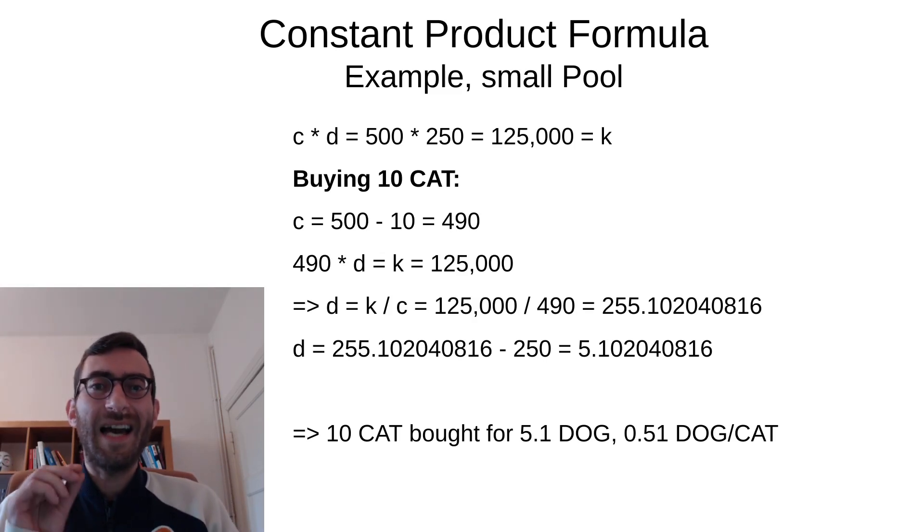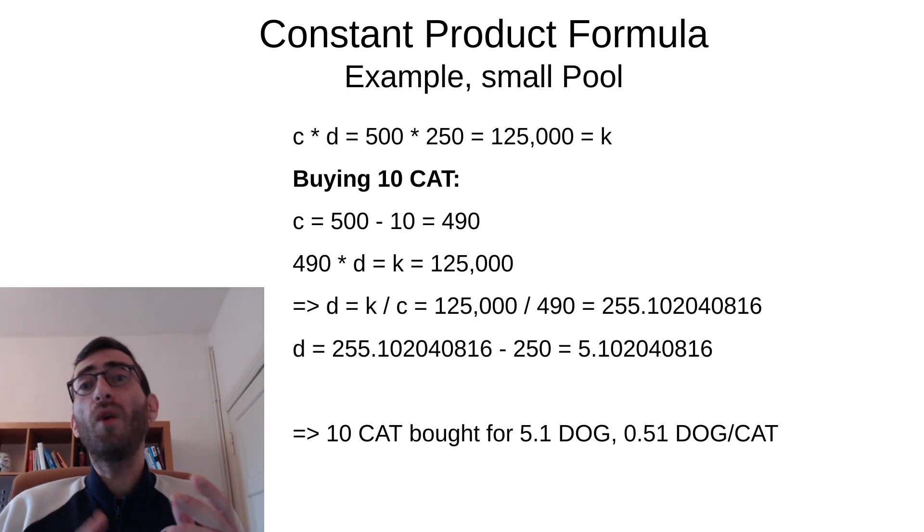So this is a tiny bit more than it would cost in the open market. And why is this? Because we're moving away from the equilibrium and these pools are supposed to basically balance themselves out, which is why Balancer of course calls itself Balancer. So you buy a small amount, you buy very close to the original price.